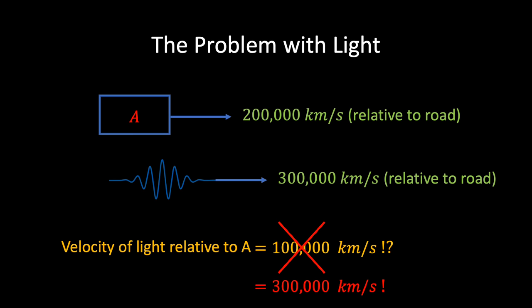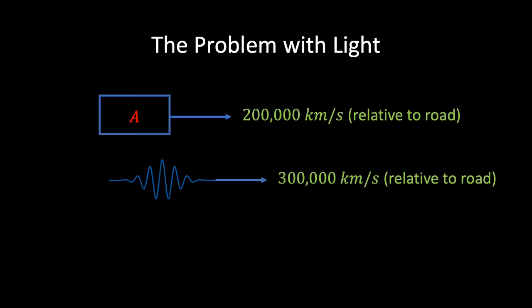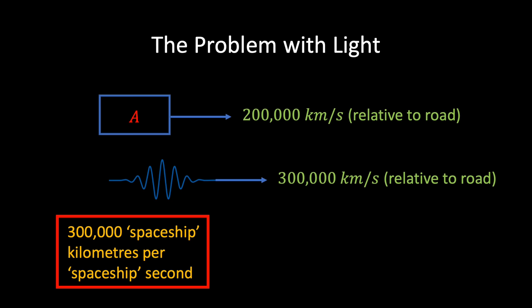Einstein realised that the only possible way in which a person standing still and a person moving could measure the same speed of light is if their sense of space and time was not the same. In other words, relative to the spaceship, the light is travelling 300,000 kilometres per spaceship-second, and relative to the road, 300,000 road-kilometres per road-second. How can one person's measure of time be different from another's in constant relative motion?